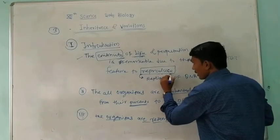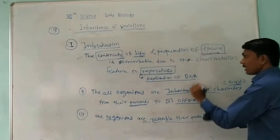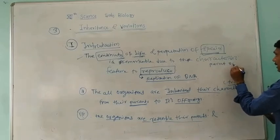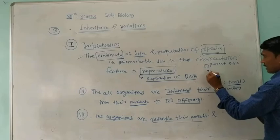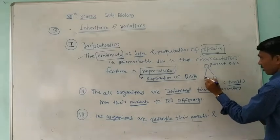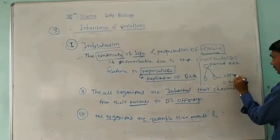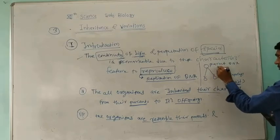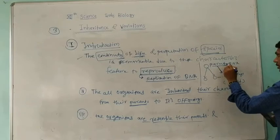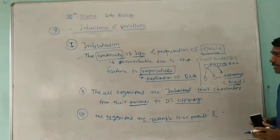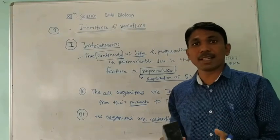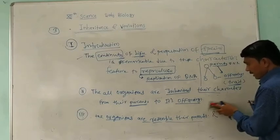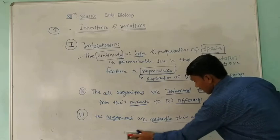We know about the process of reproduction. In that reproduction, the replication of DNA occurs. That means the parent DNA is copied. Here is one parent, and here are the offspring — two offspring. They carry the characters from parents to offspring. Some of the characters are transmitted from their parents to their offspring, and that is why some characters are similar in their offspring.